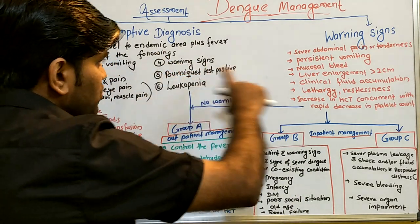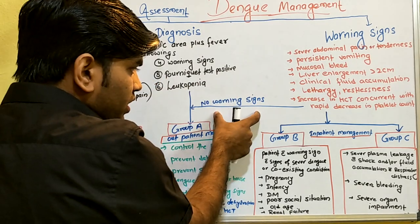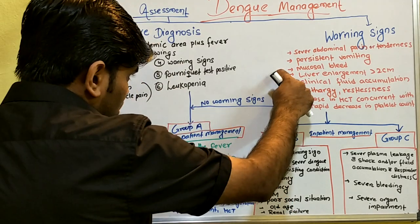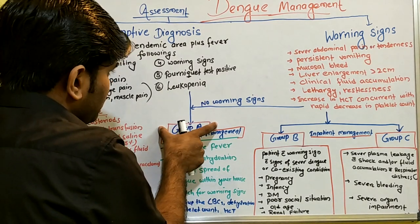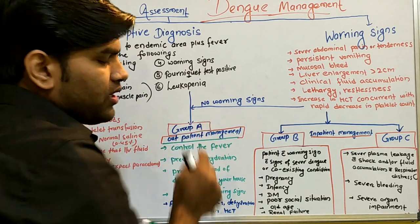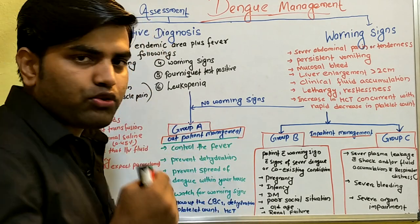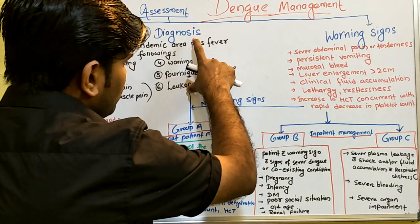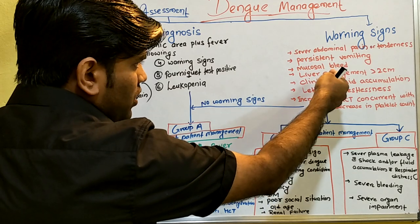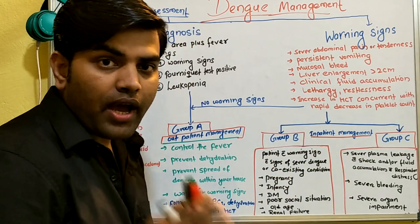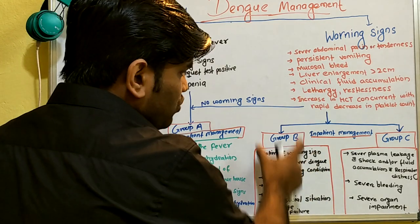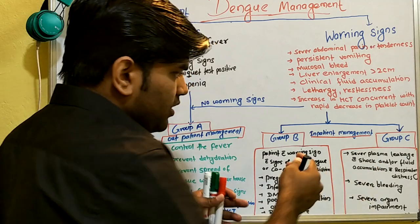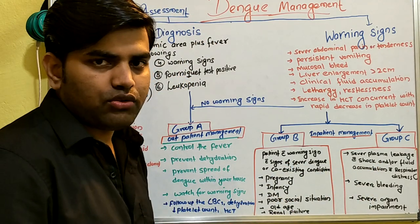You must decide whether the patient has only presumptive diagnosis or also has warning signs. If there is only a presumptive diagnosis with no warning signs, that patient is categorized as Group A and can be managed as an outpatient. If there are warning signs, the patient must be admitted and categorized as Group B or Group C. Group B can be managed in the ward, while Group C — those with compensated or non-compensated shock — need ICU management.